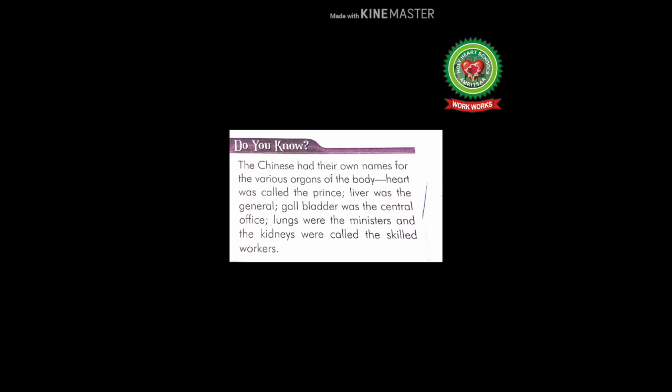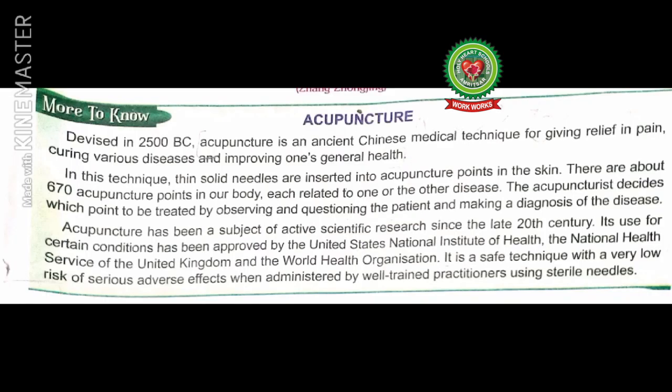Let's read the 'Do You Know' box. The Chinese had their own names for the various organs of the body: the heart was called the prince, the liver was the general, the gallbladder was the central office, the lungs were the ministers, and the kidneys were called the skilled workers. The last point is acupuncture.